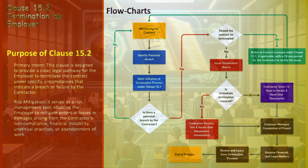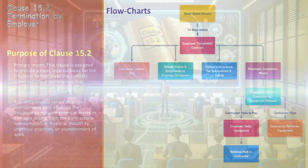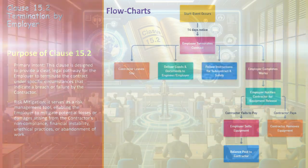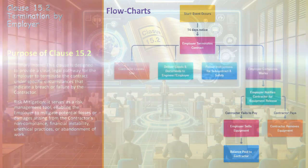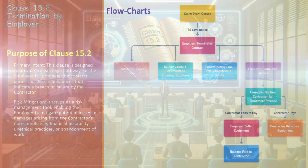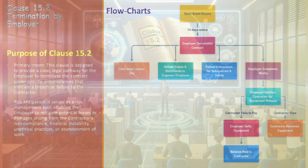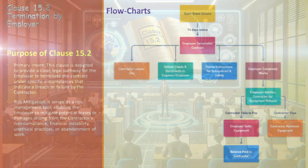After contract termination, the employer may proceed to complete the works either independently or through other entities, with the duration depending on the remaining scope and arrangements made. The contractor's equipment and temporary works are released, usually conducted shortly after termination, though subject to settlement of any outstanding payments. The process concludes once all actions following the decision are fully executed. The total duration varies depending on the complexity of the breach, response times, and subsequent actions. This flowchart offers a clear roadmap for managing contract termination scenarios under Clause 15.2 of the FIDIC Yellow Book.